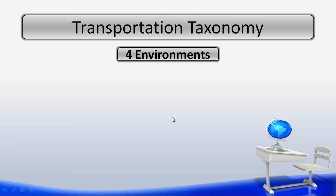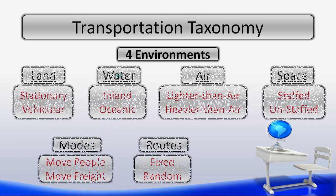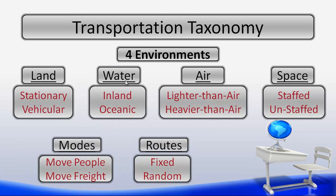Well, a quick review of our transportation taxonomy. Remember, we have four environments. Those four environments are land, water, air, and space. Our subcategories for land are stationary and vehicular. Our subcategories for water are inland and oceanic. Our two subcategories for air are lighter than air and heavier than air. And our two subcategories for space are staffed and unstaffed. We have two modes of transportation. We either move people or freight. And then we have two types of routes. We have a fixed and we have a random route.